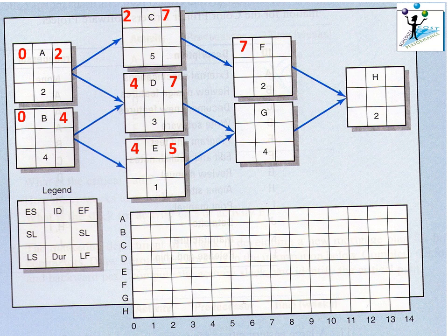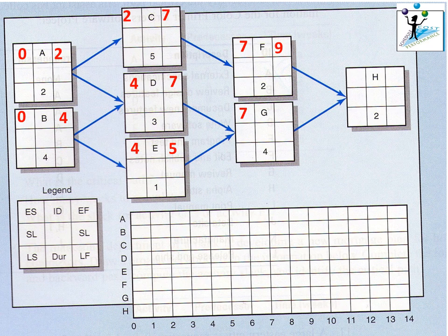Activity F can begin once Activity C has finished, so its early start time is seven, and with a duration of two weeks, the early finish is nine weeks. Activity G is also a merge activity — we choose the largest of five or seven, which is seven, since Activity D must finish first. Seven plus four gives eleven. The last activity H is another merge activity; we choose the largest of nine and eleven, giving eleven, with a duration of two weeks making the early finish thirteen weeks.